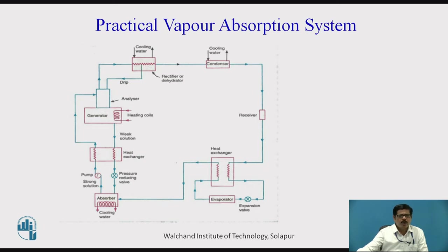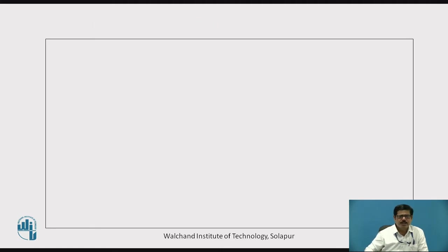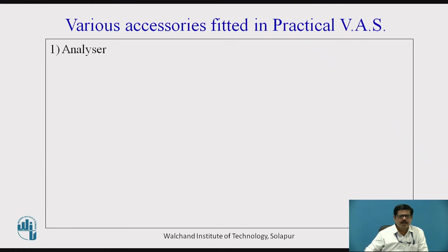Now what are those accessories fitted? We will see one by one. The first accessory which is fitted is the analyzer. The second accessory fitted is the rectifier. And then two heat exchangers are added. So we will see first of all the function of each of these, and then we will study again the working of the entire practical vapor absorption system.